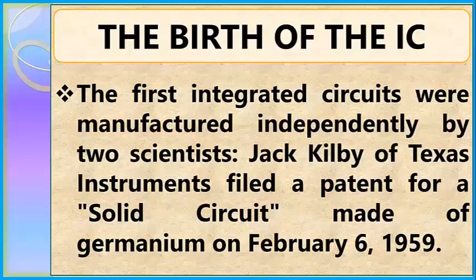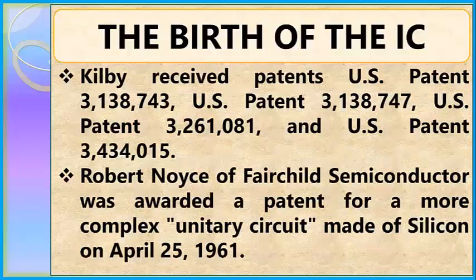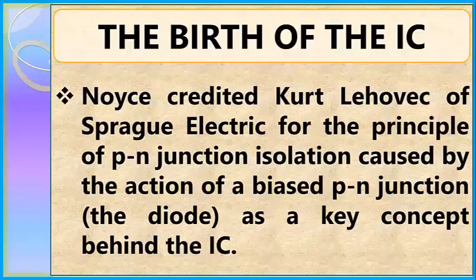The first integrated circuits were manufactured independently by two scientists. John Kilby of Texas Instruments filed a patent for a solid circuit made of germanium on February 6, 1959, and received patents from the U.S. government. Robert Noyce of Fairchild Semiconductor was awarded a patent for a more complex unitary circuit made of silicon on April 25, 1961. Noyce credited Kurt Lehovec of Sprague Electric for the principle of P-N junction isolation — caused by the action of a biased P-N junction — as a key concept behind the IC.